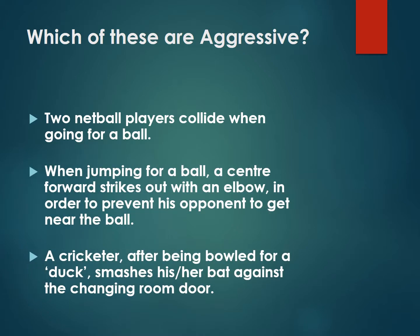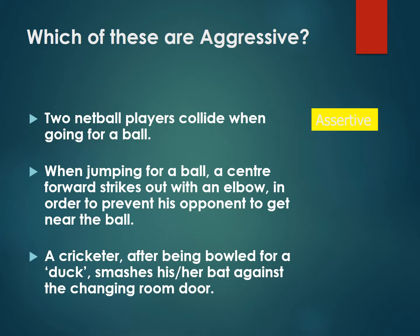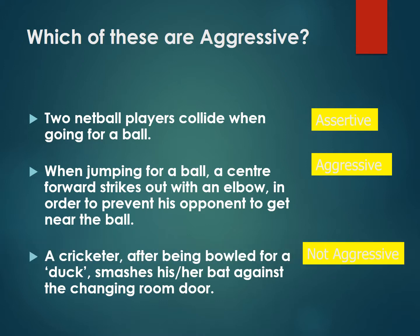Here are some examples to consider. Two netball players collide when going for a ball — I would say that's assertive; they're going for the ball but not trying to hurt each other. When jumping for a ball, a center forward strikes out with an elbow to prevent his opponent getting near — I would say that is aggressive. And a cricketer who, after being bowled out for a duck, smashes their bat against a changing room door — because it's an inanimate object, most definitions of aggression would say that's not aggressive, although some psychologists would disagree.